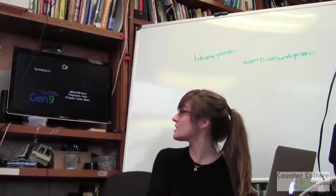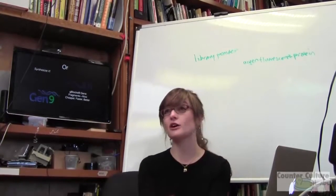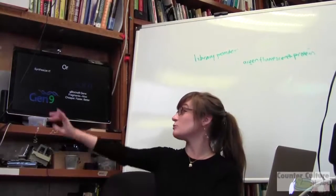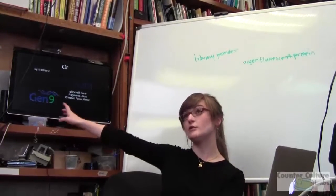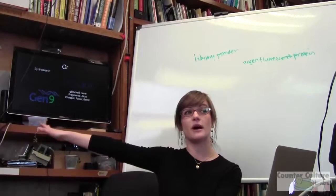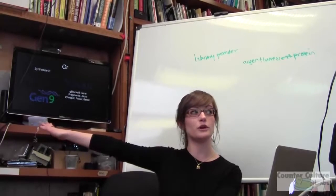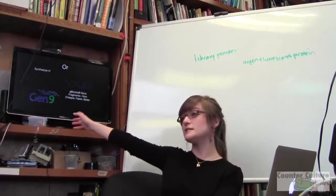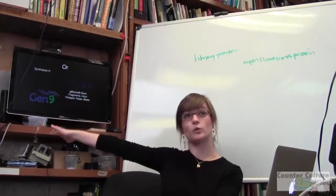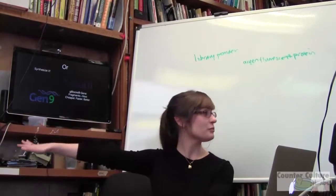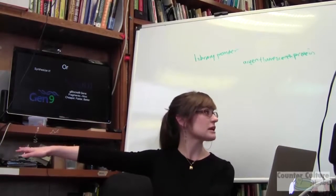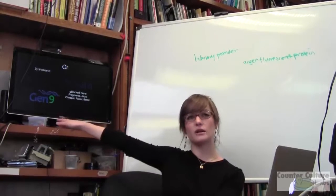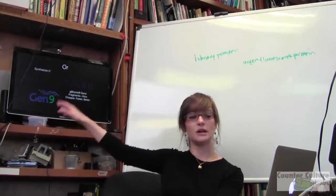IDT also has something called gene blocks. The cost breaks down to relatively the same amount, except Gen9's synthesis takes about 4 to 5 weeks to get your gene product to you, while IDT you'll get in about a week. They build their sequences slightly differently and analyze them differently, but the cost is approximately the same.